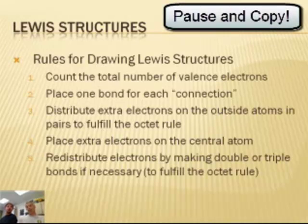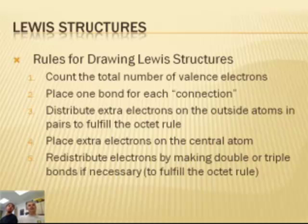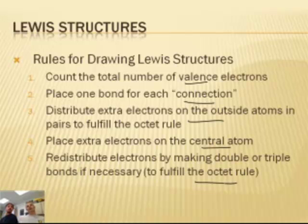Now, to draw Lewis structures, there are five rules that you must apply. Hey, guess what? Pause and write these down. This is the pause video. Okay, so you've paused and written these down. So you're going to count the number, place one bond for each connection, distribute on the outside first, extra electrons on the center will redistribute for double or triple bonds. So you're going to have these rules. We're going to just do these together with several examples.